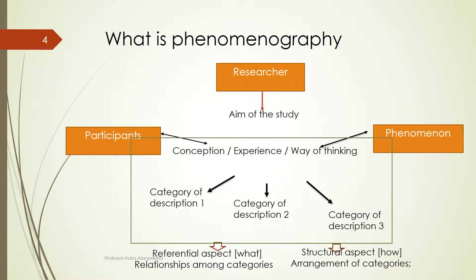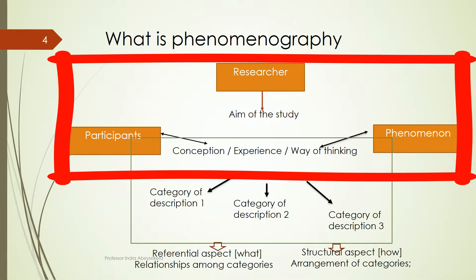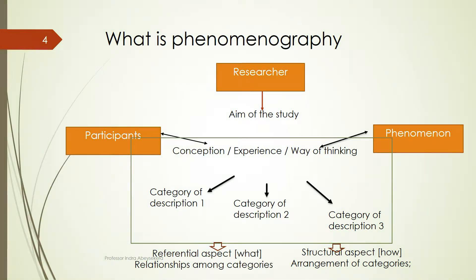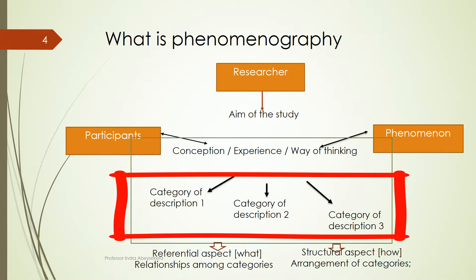When a researcher investigates a phenomenon using phenomenography, it will obtain data from participants about the phenomenon — ways of thinking, ways of experiencing, or ways of conceiving the phenomenon. When these data are analysed and meanings are found and grouped, they can be categorised as categories of description.